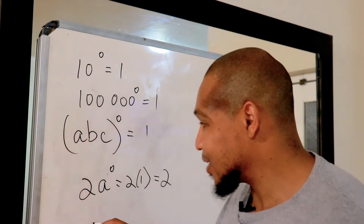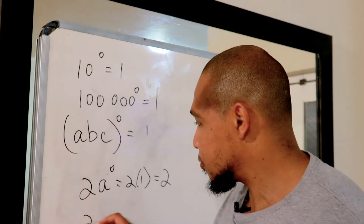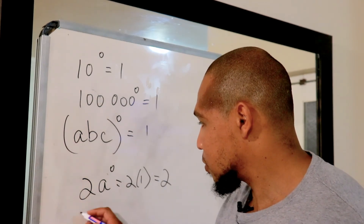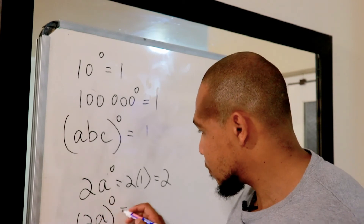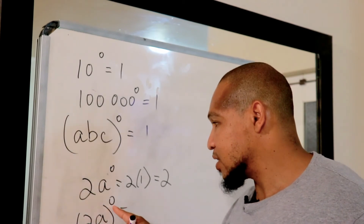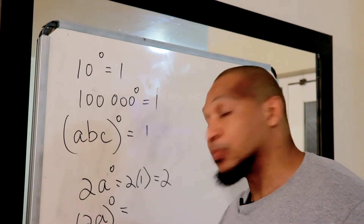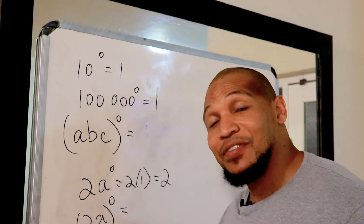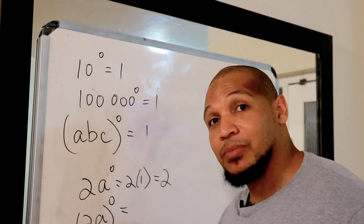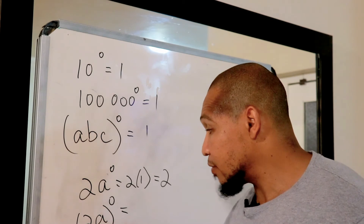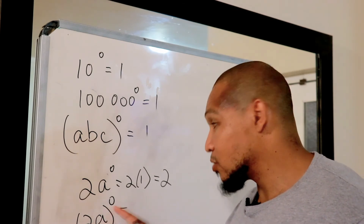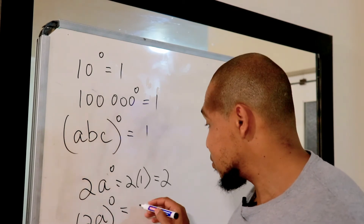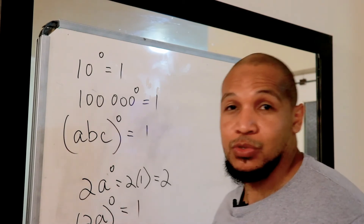Now look at this difference: when the zero is inside the bracket, it is applicable to everything inside the bracket. So everything inside the bracket to the power of zero is equal to one.